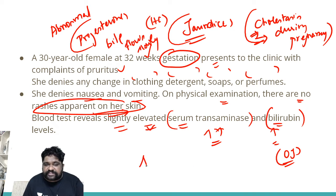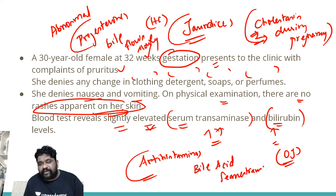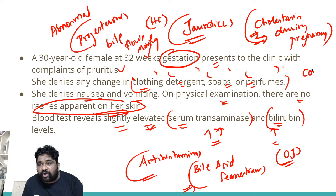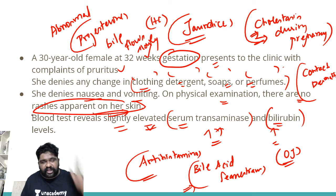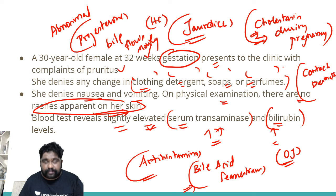Treatment can include simple antihistamines to reduce itching. If cholestasis is significantly troubling, the patient can be placed on a bile acid sequestrant like cholestyramine. Major treatment is not necessary for pure cholestasis of pregnancy. The history of no change in clothing, detergent, soaps, or perfumes is given to rule out contact dermatitis — a type 4 hypersensitivity reaction. Remember, in any clinical history, a negative history is as important as a positive history; never ignore clinically significant statements.